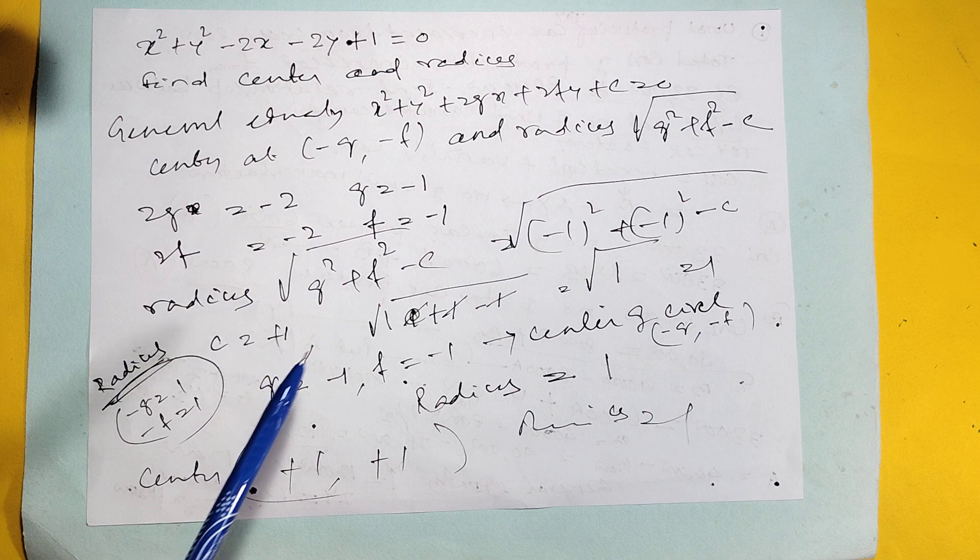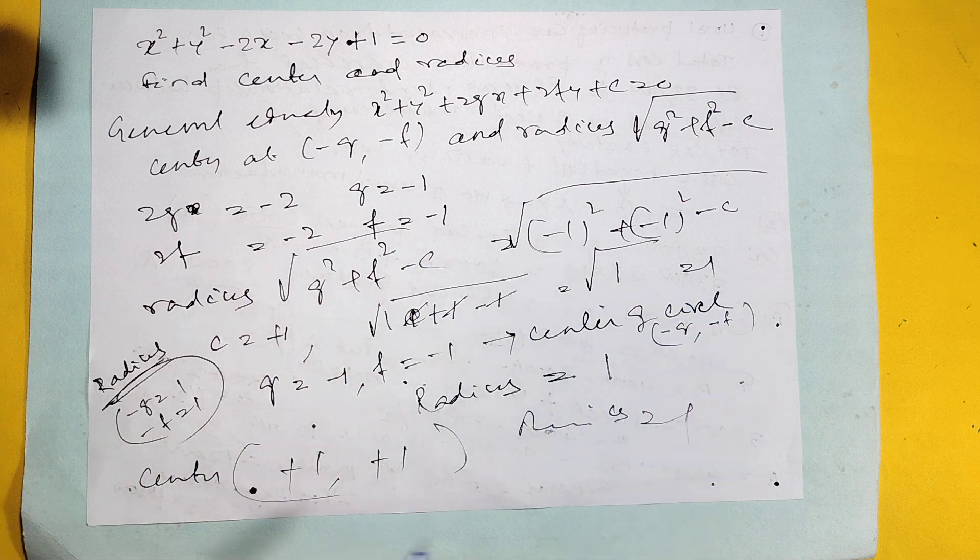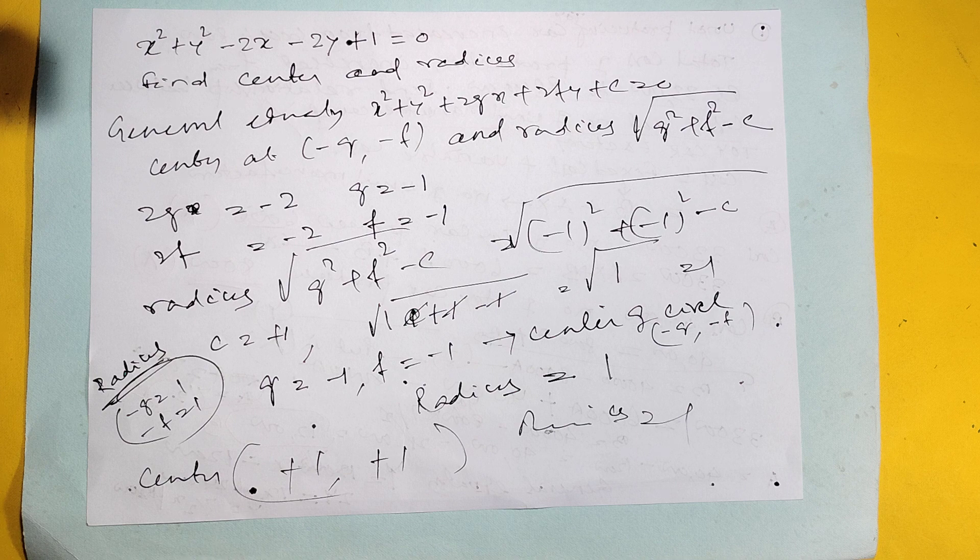Radius equals square root of G squared plus F squared minus C, so it is coming 1. So center is plus 1, plus 1 and radius is 1, completed.